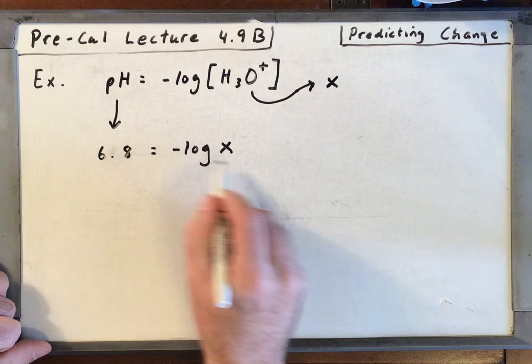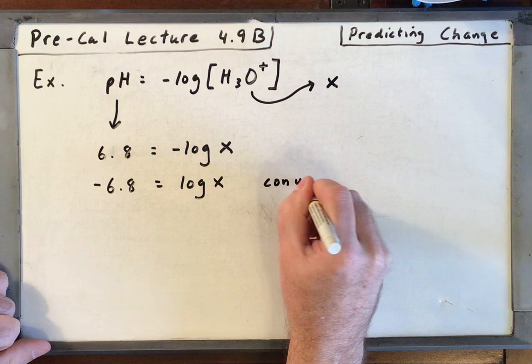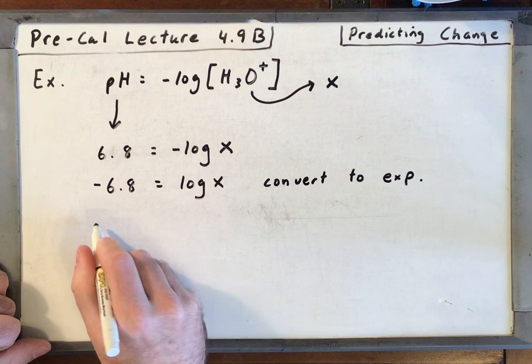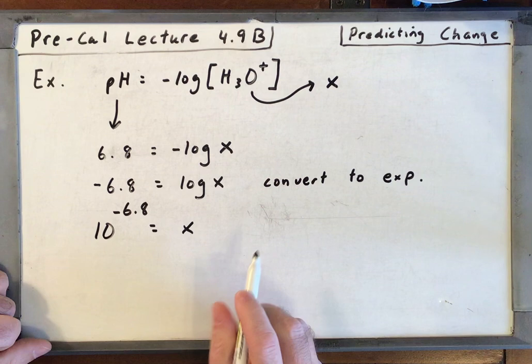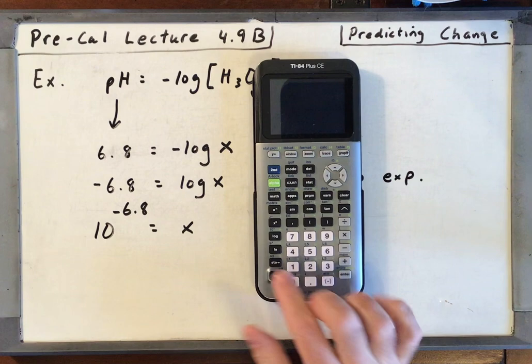All right, let's divide both sides by a negative. So I've got negative 6.8 equals the log base 10 of X. We're going to convert to an exponential now. So that's 10 to the negative 6.8 equals X. Put that in your calculator. 10 raise it to the negative 6.8 power. We'll just go ahead and do that.